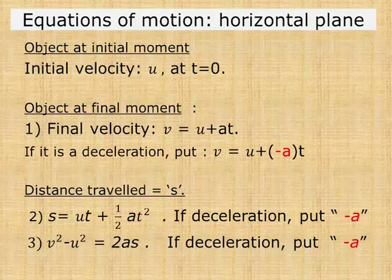So five things have to be tied up, the initial velocity, final velocity, acceleration, time, and the distance covered.